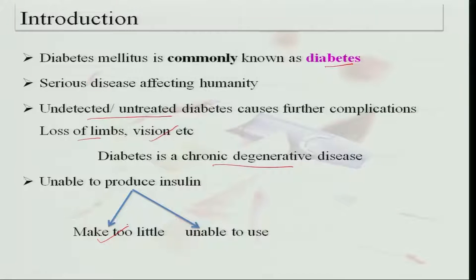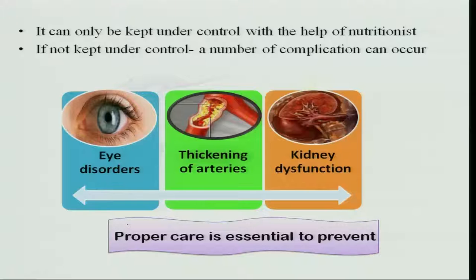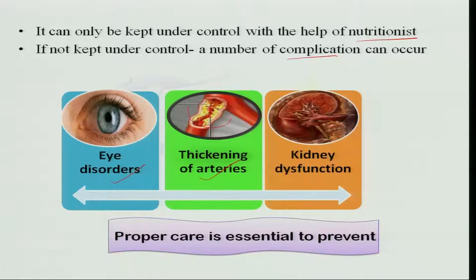This occurs because the pancreas are unable to produce insulin or they make very little insulin. Insulin is the one which carries glucose to the cells, so when insulin is not there the glucose cannot be carried to the cells and the entire system is disrupted. It can be kept under control with the help of a nutritionist. Complications can include blindness, atherosclerosis where there is thickening of the arteries, and disruption of kidney function because a lot of glucose is being excreted and the kidneys are overloaded.